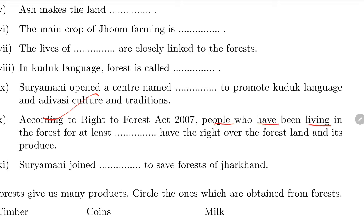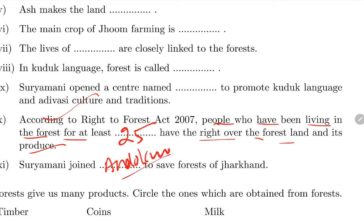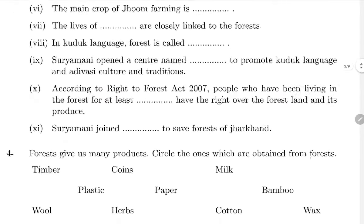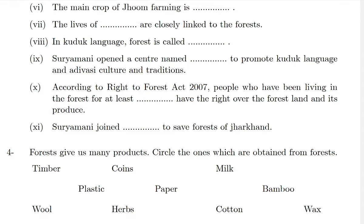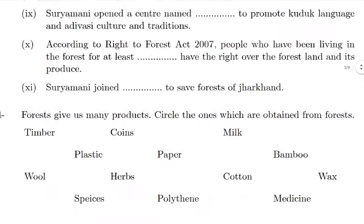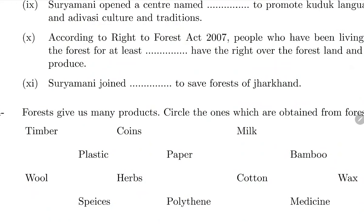According to the Right to Forest Act 2007, people who have been living in the forest for at least 25 years have rights over the forest land and products. Suryamani joined the Jharkhand Jungle Bachao Andolan to save the forests of Jharkhand.